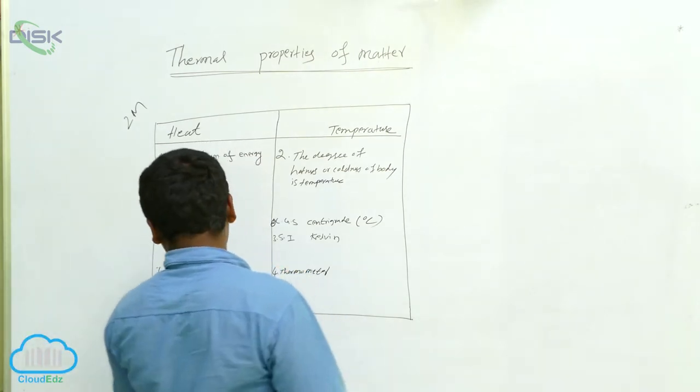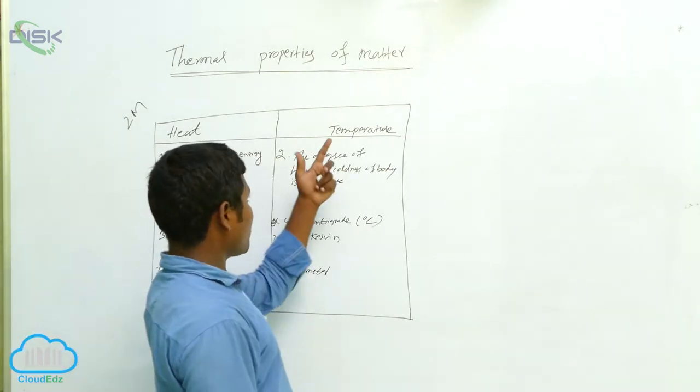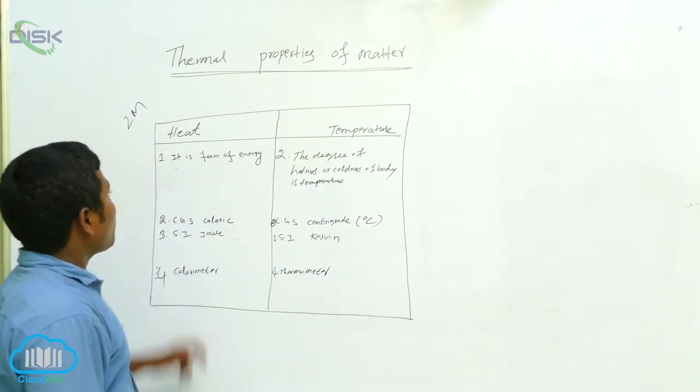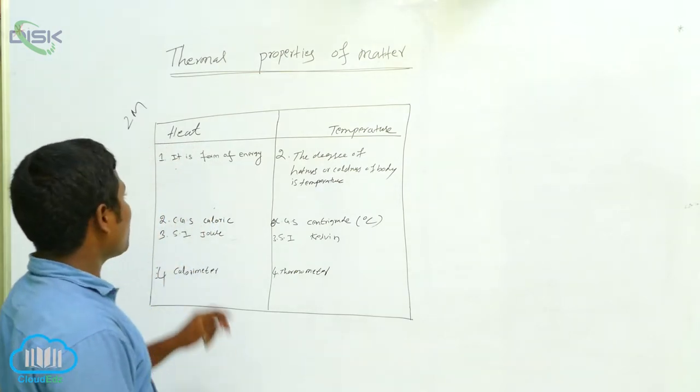Heat means a calorimeter. Next, this side, temperature, how we are measuring: thermometer. So for this, scale is there, sometime.